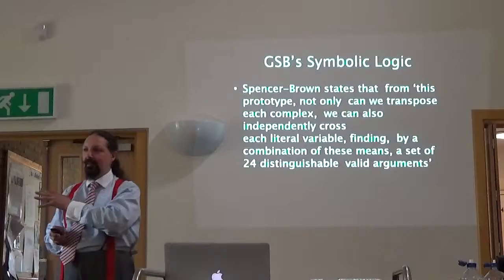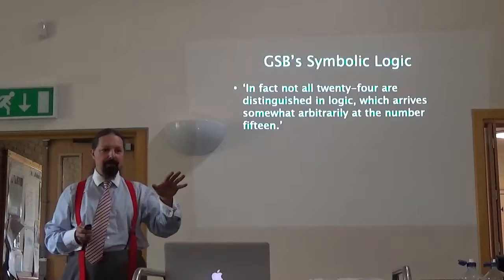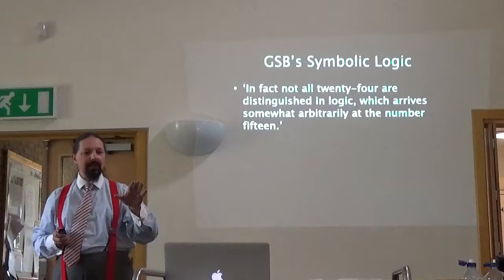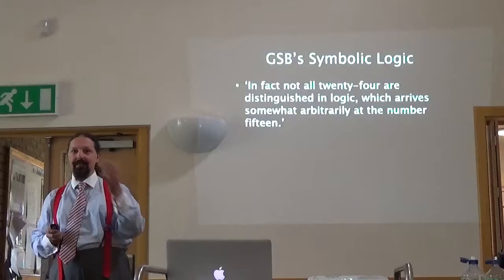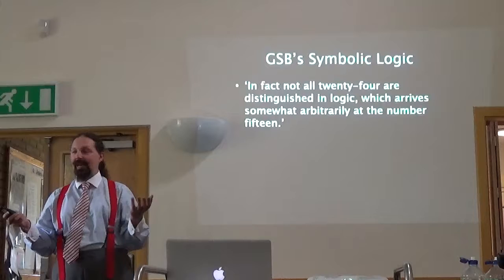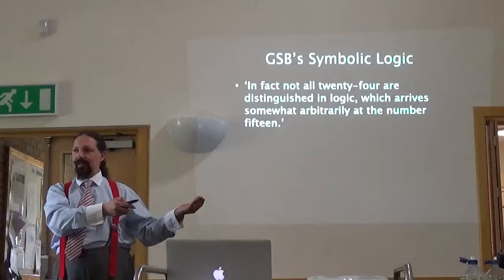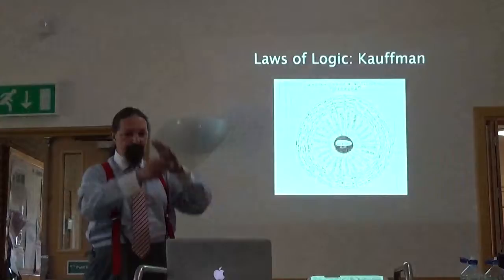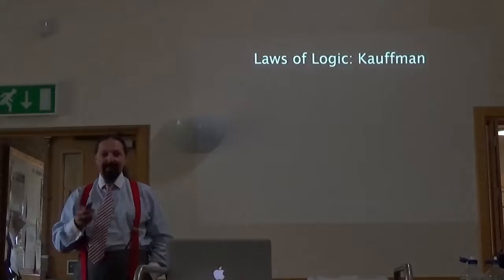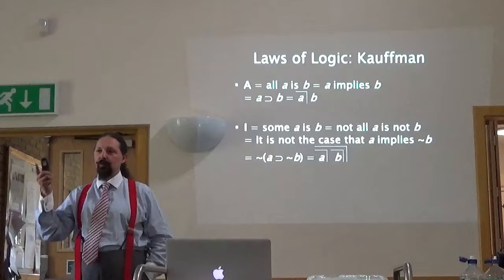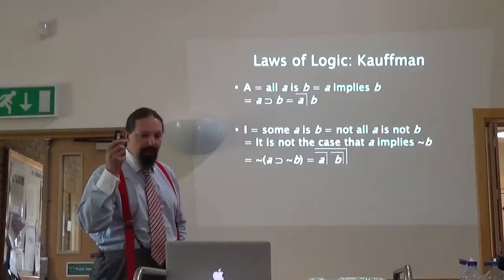He doesn't explain how to do that beyond that — he leaves it to the reader and says it's very simple. I didn't find it very simple. He continues: not all 24 are distinguished logic, which can arrive somewhat arbitrarily at the number 15. What he's saying is, if you play about with this prototype you get 24 valid arguments, and they don't match the ones we know in classical logic. Thanks to Louis Kauffman, who produced a wheel of syllogisms, we've worked out that yes, we can put the prototype into 24 patterns and produce 24 valid arguments.